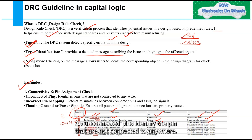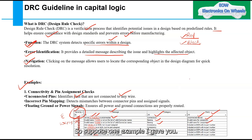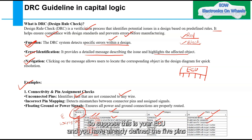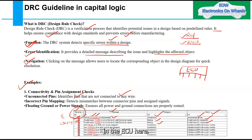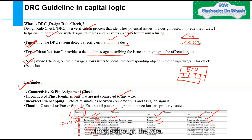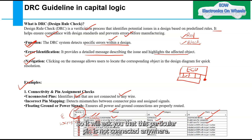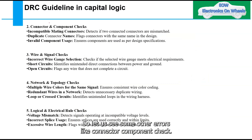Under connectivity and pin assignment, DRC identifies unconnected pins — pins not connected to any wire. For example, if your ECU has five pins defined and four have wire connections but one pin is open-ended, DRC will throw an error saying this particular pin is not connected anywhere.